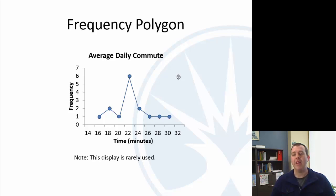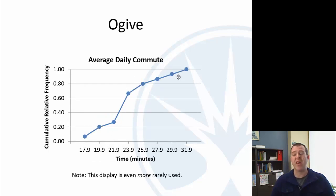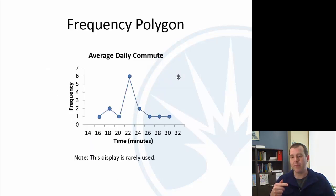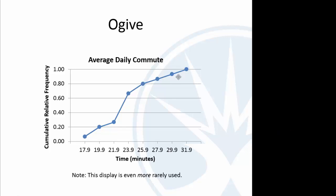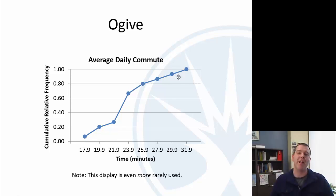Another one similar to that is an ogive, which is kind of similar to the last one but now it's cumulative. And so in order to be cumulative you'll notice it's at the right endpoint. And it's always going to end at 1 because it's cumulative, so below 31.9 is 100%. That's everyone. And I made a note on the bottom here. This one is rarer than frequency polygons. But I just did want to mention it so you've been exposed to it.